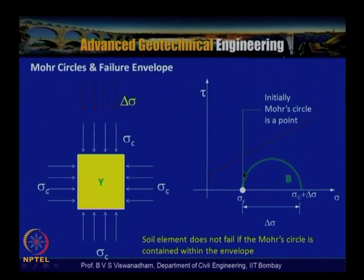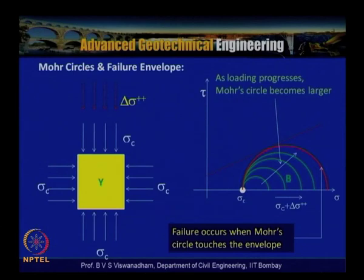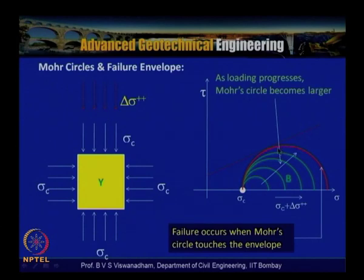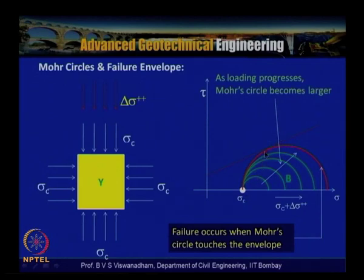The soil element does not fail if the Mohr circle is contained within (below) the envelope. As sigma_c + delta_sigma increases, the circle migrates rightward and grows. When it touches the failure envelope, failure occurs at the point of tangency, yielding tau_ff (shear strength at failure) and alpha_f (inclination of the failure plane).